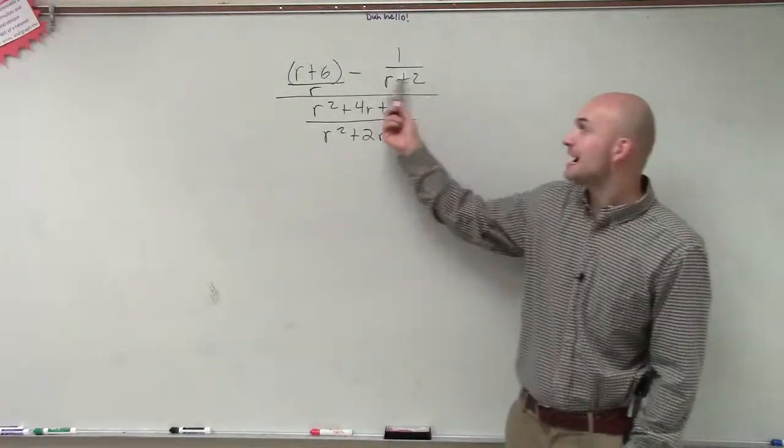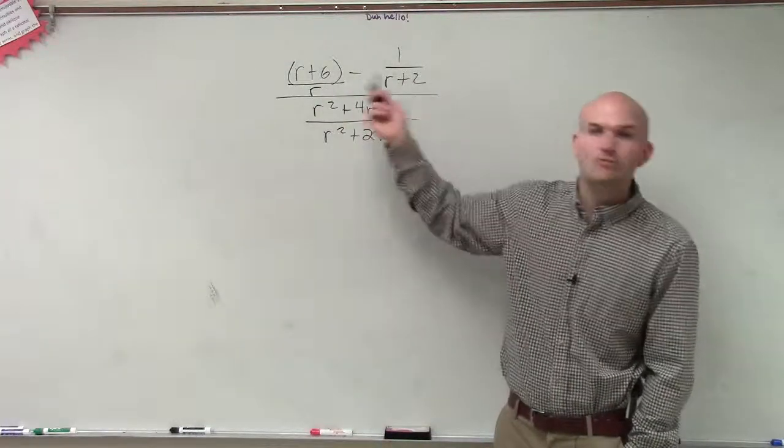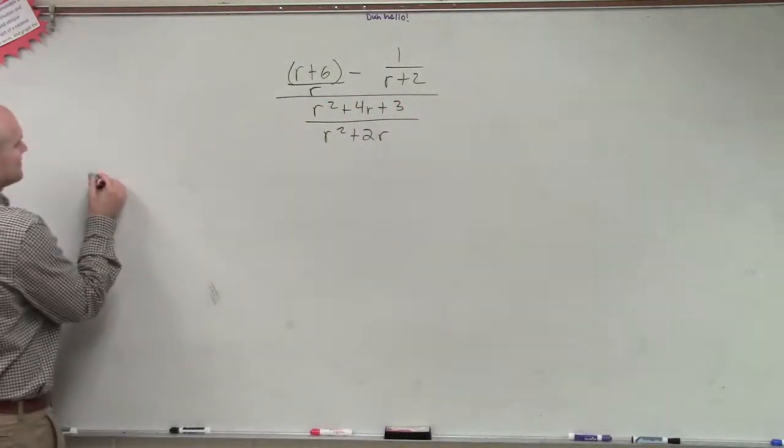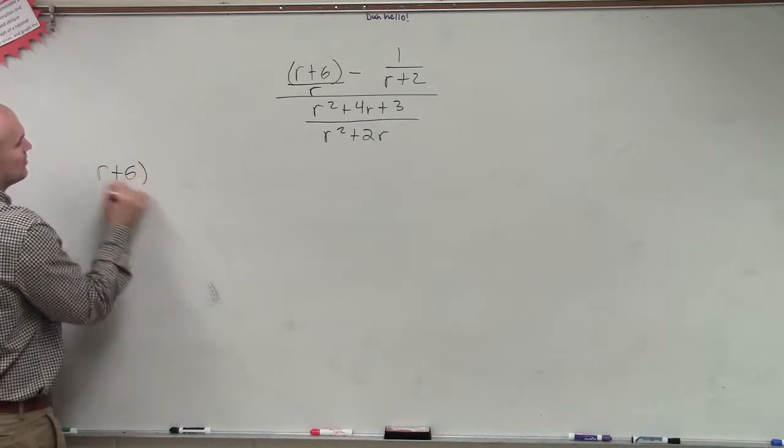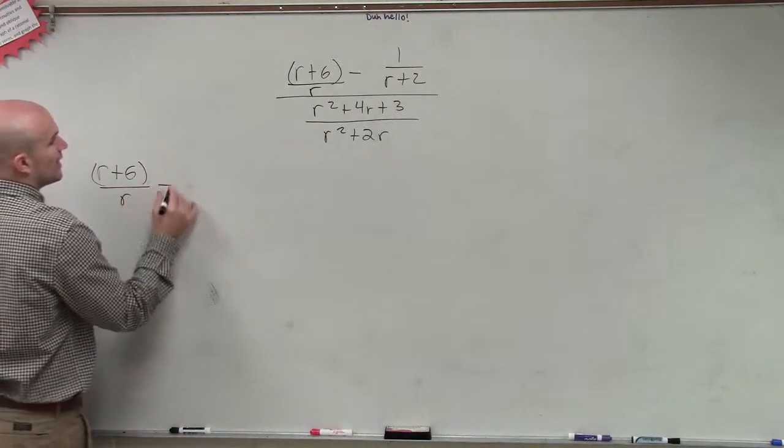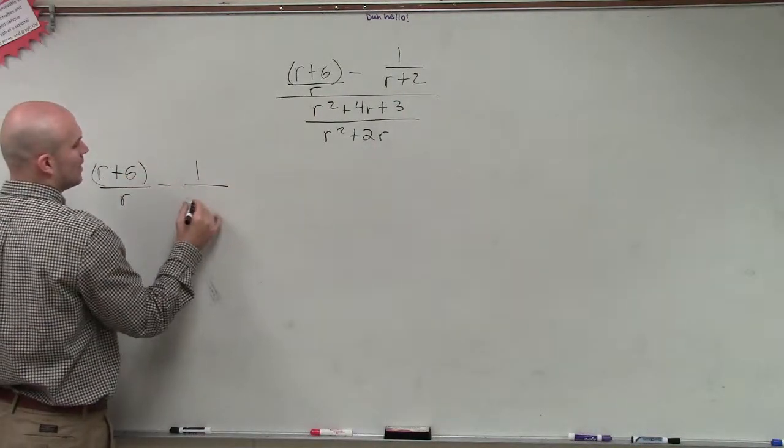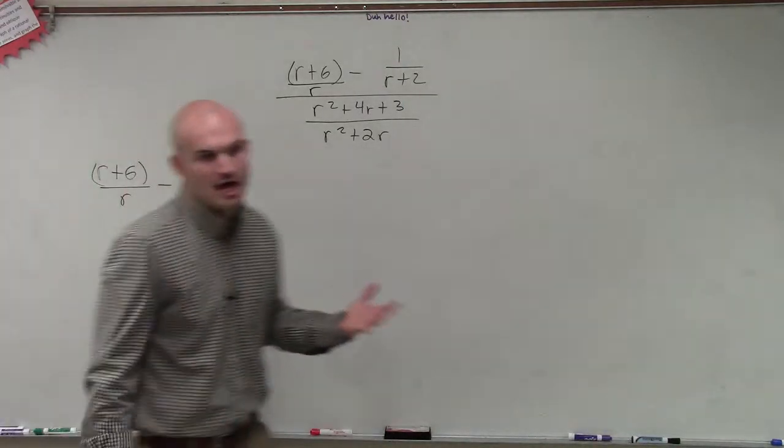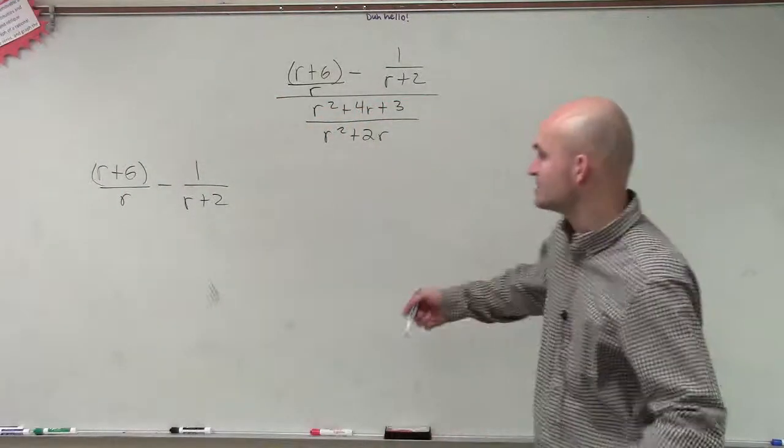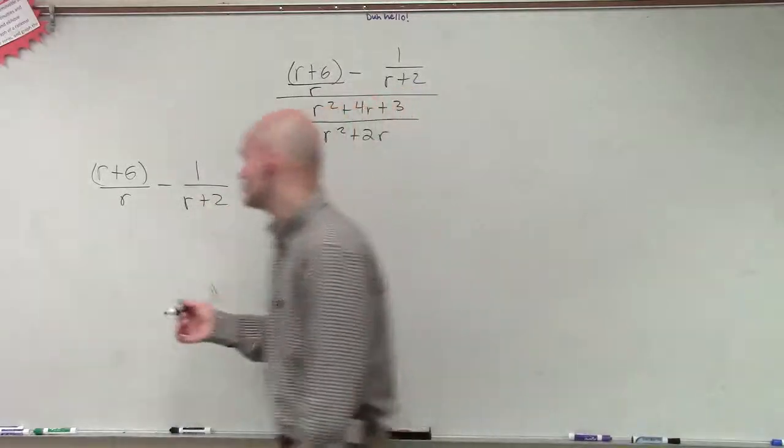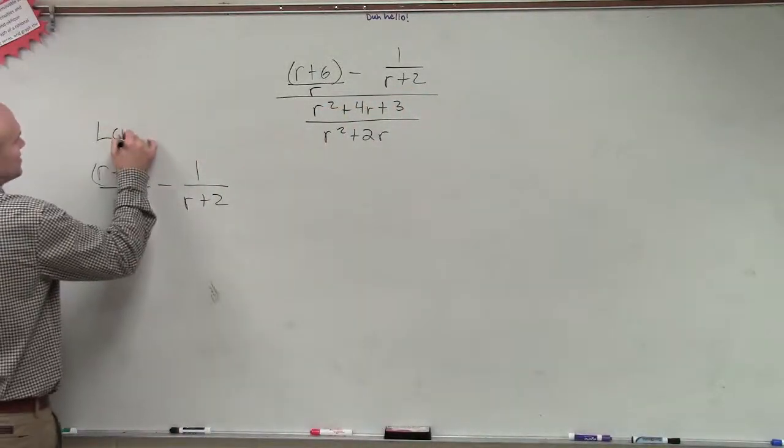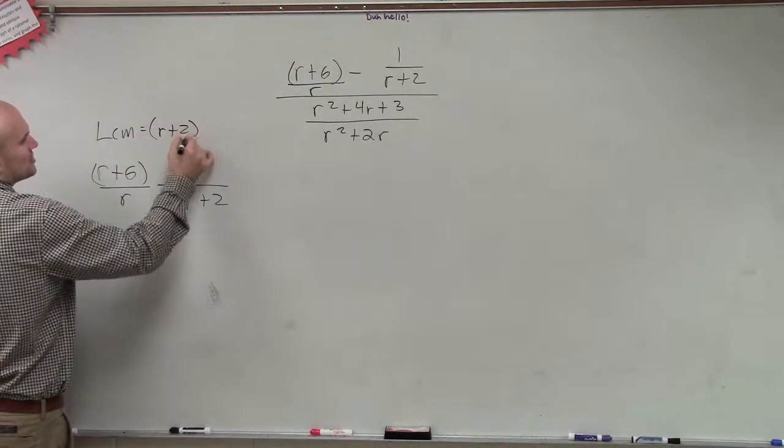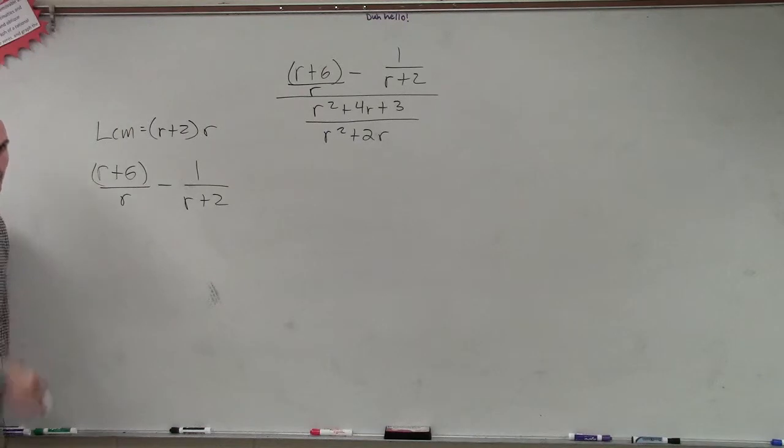So what I need to do is I just need to see, how can I combine these? Well, we've talked about that. We can combine these. So what I'm going to do is I'm going to do that over to the side. I'm going to say I want to combine r plus 6 over r, and I want to subtract 1 over r plus 2. So to do a problem like this, we just need to find the LCM. Find the LCM and say, all right, what is the LCM that they both share? Well, the LCM is going to be both denominators, which would be r plus 2 times r, right?